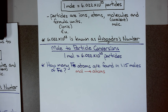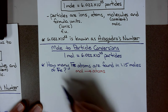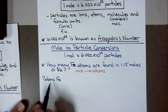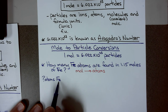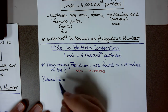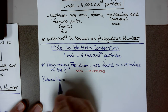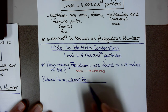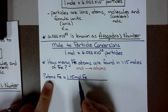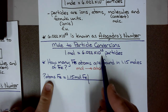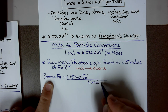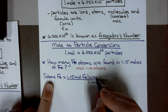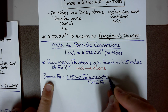Get used to writing a question mark for what you're looking for. We want to know how many atoms of iron. It is important to include the unit of measurement and the unit of substance. I want to know how many atoms of iron are in 1.15 moles of iron. I have the same substance, but I need to change moles to atoms. For every 1 mole of iron on the bottom, I have 6.022 times 10 to the 23rd atoms of iron on top.